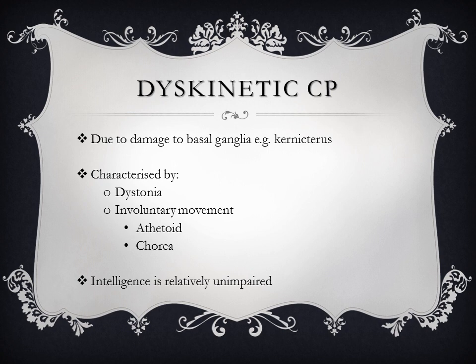Dyskinetic cerebral palsy occurs due to damage to the basal ganglia, such as in bilirubin encephalopathy — kernicterus. It is characterized by dystonia and involuntary movements such as athetoid or chorea. Dystonia is involuntary sustained muscle contractions resulting in twisting and repetitive movements or abnormal postures. Athetoid movements are slow, involuntary, writhing movements which mainly affect the fingers, hands, toes, and feet.